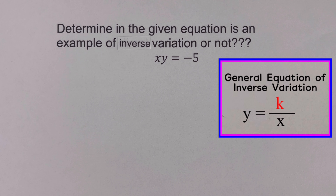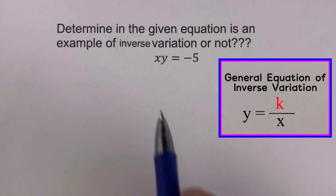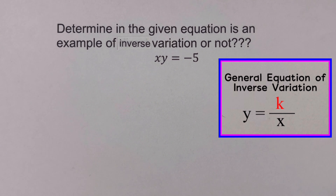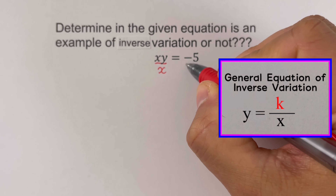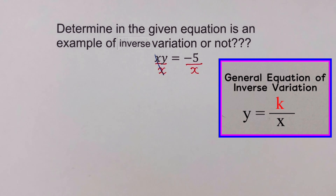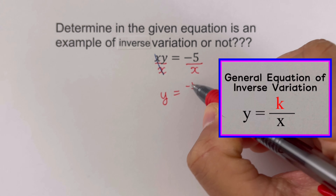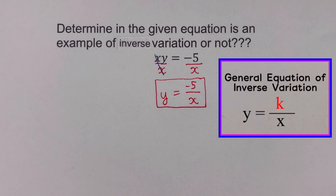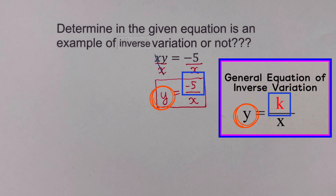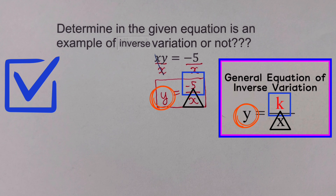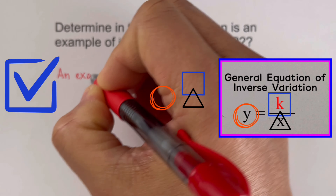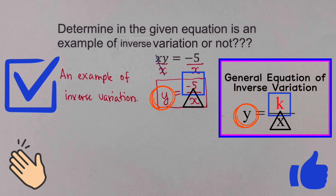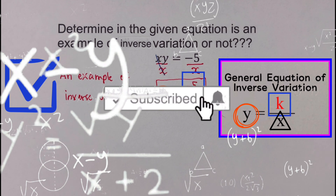Determine if the given equation xy equals negative 5 is an example of inverse variation or not. We remember that the general equation for inverse variation is y equals k over x. In this problem, y is not isolated by itself, so we divide both sides by x. This gives us y equals negative 5 over x. Our y is by itself, negative 5 matches our k, and x is in the denominator of negative 5. This tells us that this is an example of an inverse variation.